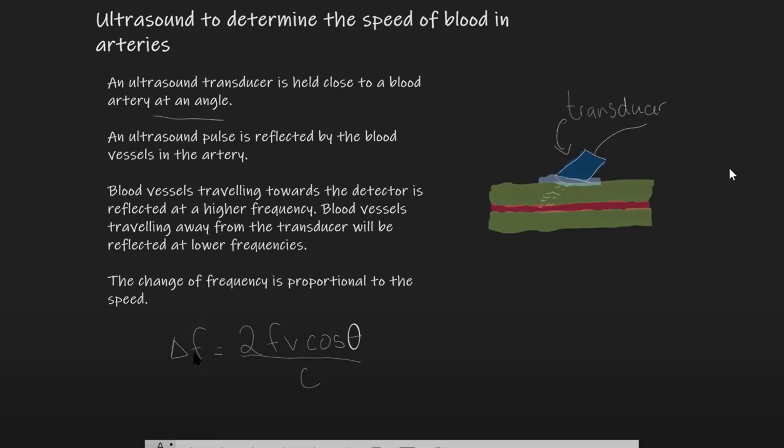This here, delta f is the apparent change in frequency and f is the original frequency. Note that this equation will actually vanish because cos of 90 degrees is equal to zero if the transducer is held perpendicularly. Therefore, we have to hold it at an angle.